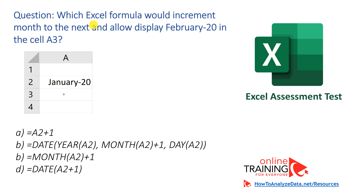Which Excel formula would increment the month to the next and display February 2020 in cell A3? In the screenshot, we have January-20 in cell A2. Four formulas are presented as choices: A) A2+1, B) a more complex formula using the DATE function, C) MONTH(A2)+1, and D) DATE(A2)+1. Which one would you choose?